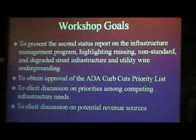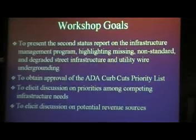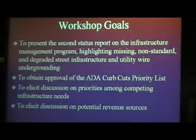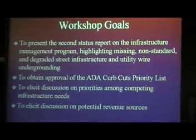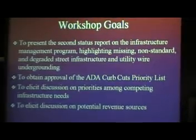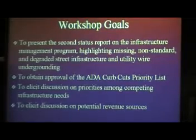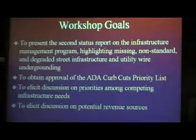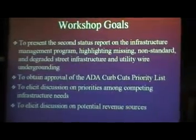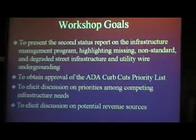The only formal action we're going to ask council to take is to approve the ADA curb cut priority list. Later in the presentation, the prioritization method will be described — how we came up with that list and why it makes sense to approve it. The two remaining items are already in discussion as we go, and those are the goals for tonight's workshop.